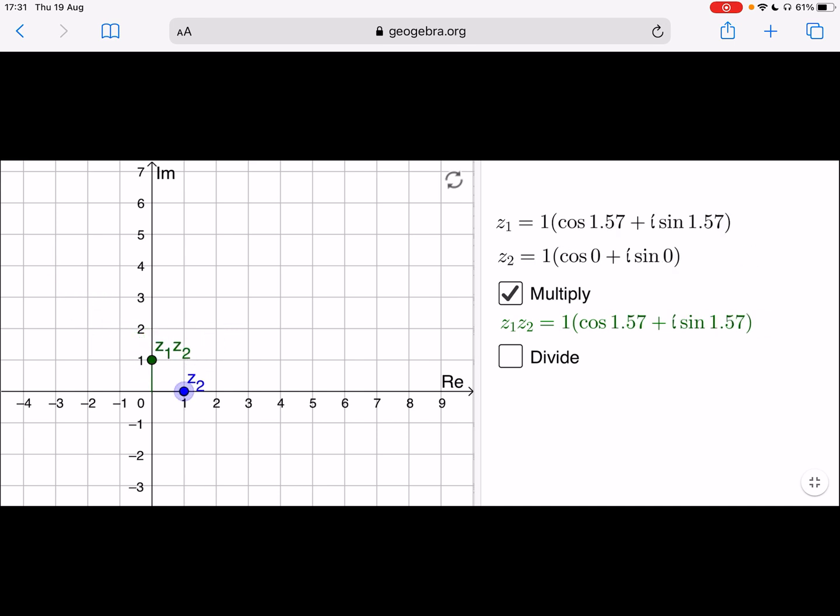And you can see what might happen here. Let's just have 1 and i. You can see how they multiply. And as you move them around, you can see how you add one angle on and it makes the Z1 Z2 move further around. Interesting stuff behaving there.